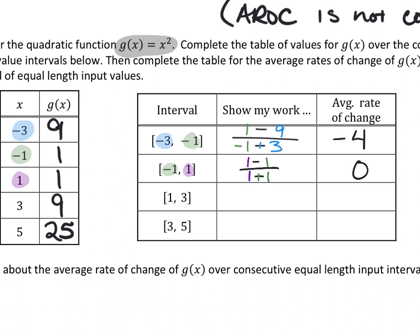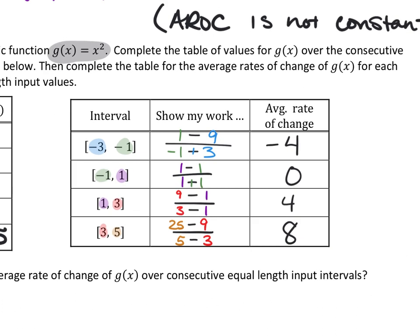Can you fill out the rest of the table? As we get our table filled out finding all the rates of changes between these intervals — between negative 3 and negative 1, between negative 1 and 1, between 1 and 3, and 3 and 5 — we can find a pattern. What's happening to the average rates of change every time? These average rates of change are changing at a constant rate: plus four, plus four, plus four. My rates of change are changing at a constant rate.